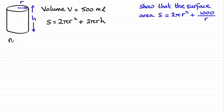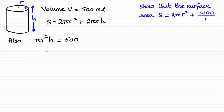We know that the volume is given by the area of the end — the area of the circle — times the height. So that's going to be πr² times h, and that's going to give us the volume, which we can equate to 500. We can now make h the subject by dividing both sides by πr².